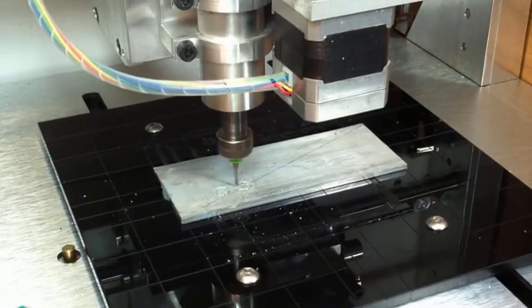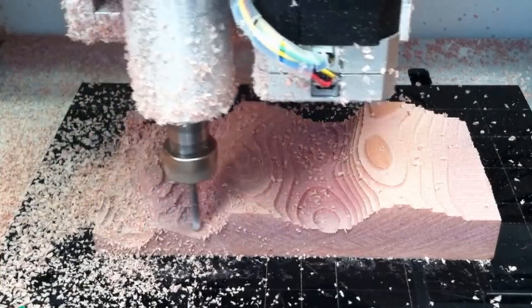Hi, I'm George, I'm Rob, and I'm Apollo, and this is the Nomad 883. It's a ready-to-run CNC milling machine that is at home in your shop, studio, or kitchen table.